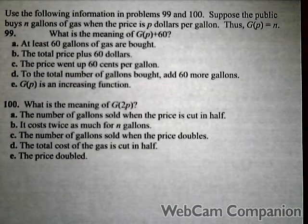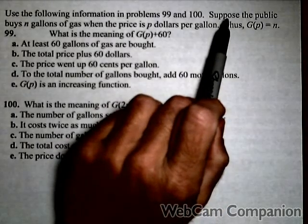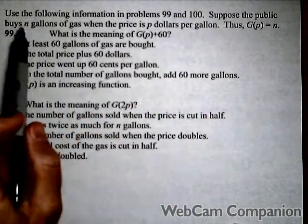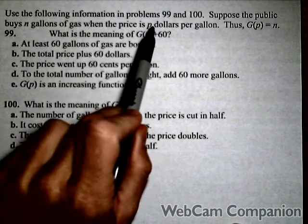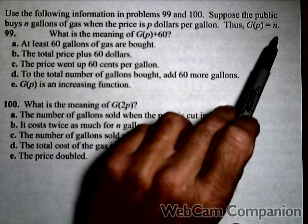In this video we're interpreting transformations of functions. We have the following scenario: the public buys n gallons of gas when the price is p dollars per gallon. So G(p) equals n.